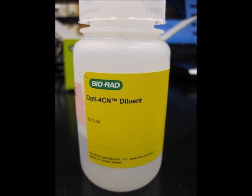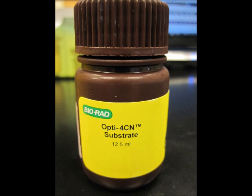To make the detection substrate, mix one part OPTI-4CN diluent with 9 parts Millicue water. Right before use, add 0.02% OPTI-4CN substrate. Pour the substrate onto the membrane and shake by hand. The colored precipitate will begin to appear. Develop for no more than 5 minutes.